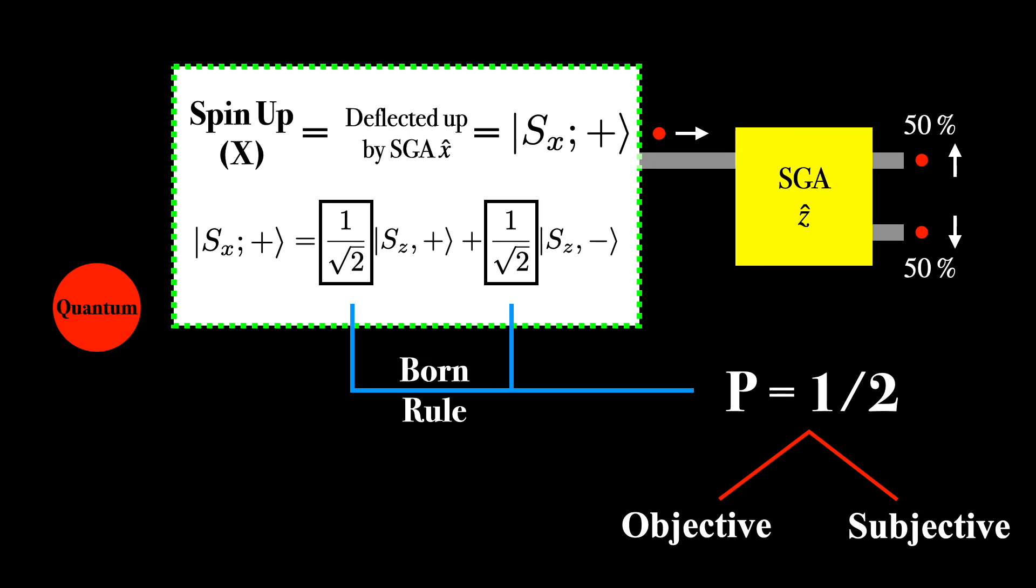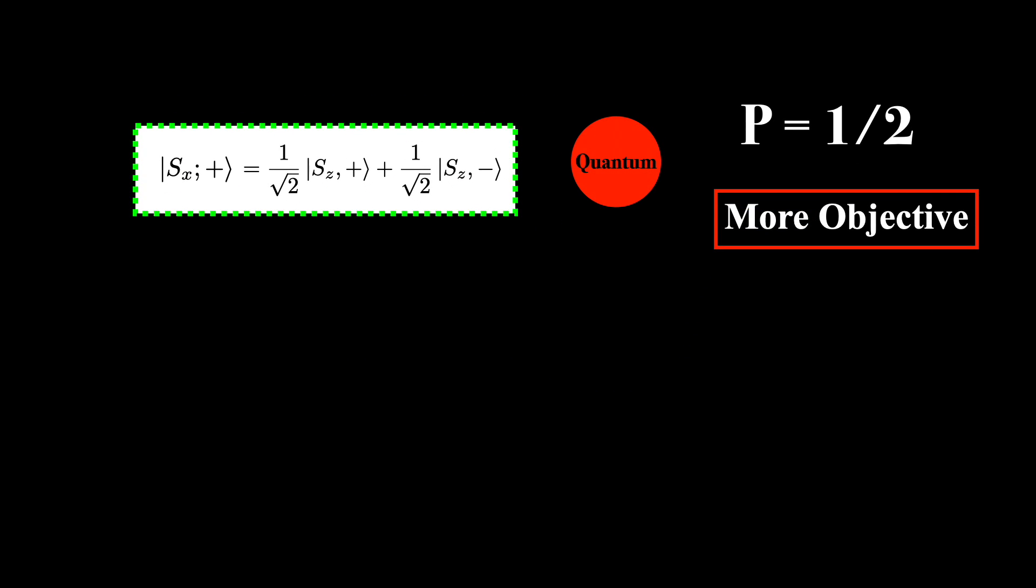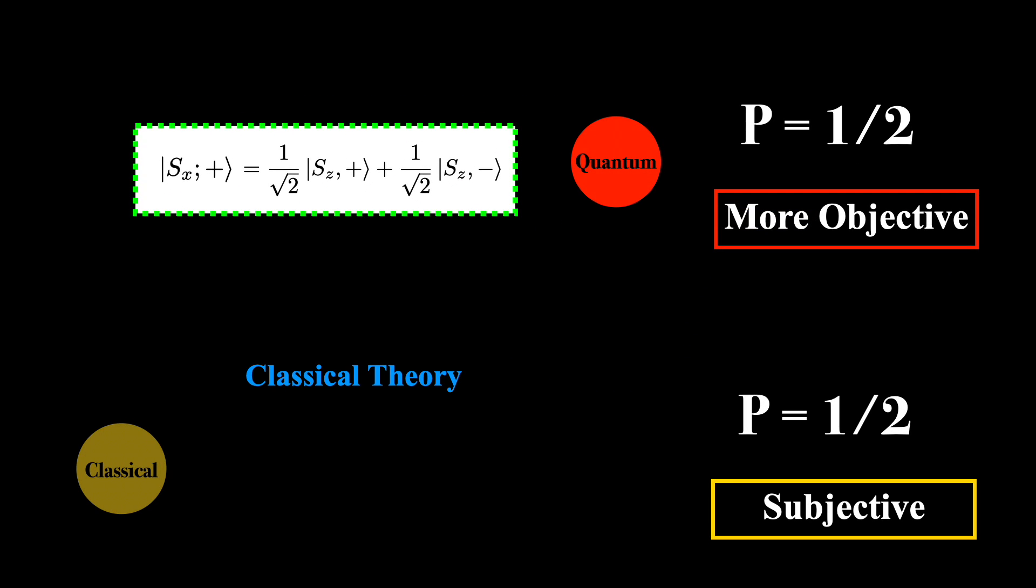This is just like the probability we had with flipping our classical coin, except with one extremely important difference. The probability we are speaking about here is not just based on our subjective knowledge, but it is built right into quantum theory itself. So although it can be debated just what it means for a probability to be objective, the probability we are encountering here is in an important sense more objective than what we encountered with the classical coin.